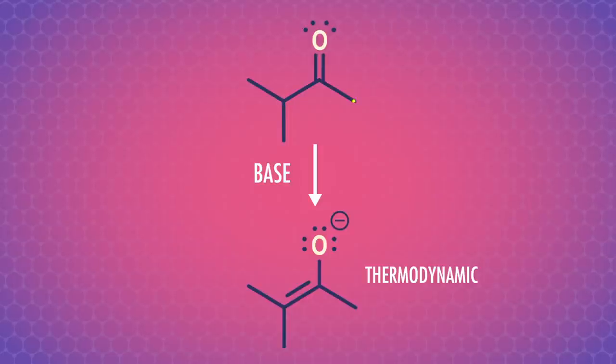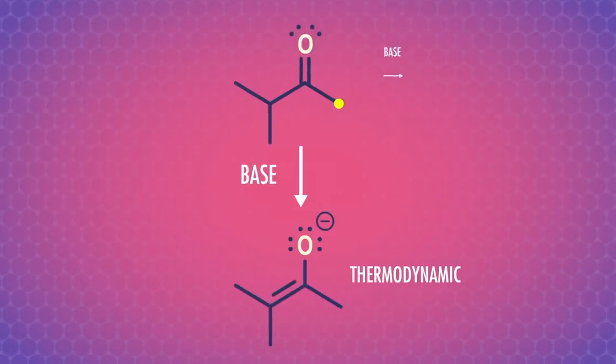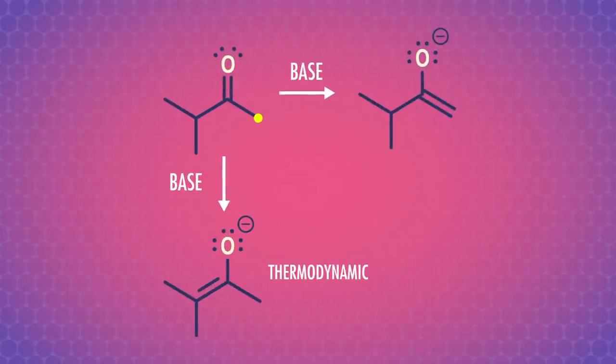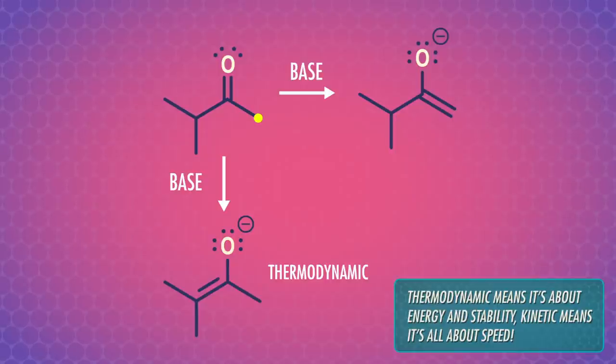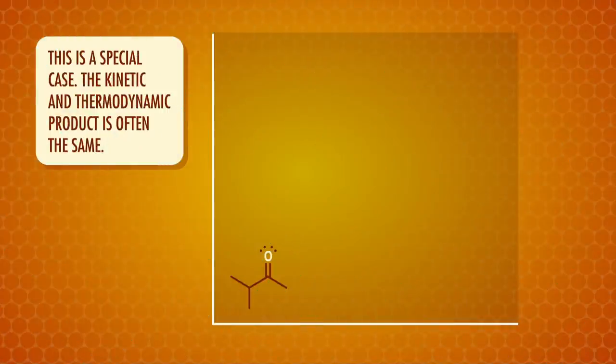If we remove a proton from the less substituted alpha carbon in the methyl isopropyl ketone, we get an enolate with a less substituted carbon-carbon double bond. This product forms more quickly, because the hydrogen being removed is more sterically accessible. There's less stuff around it. So we call it the kinetic product.